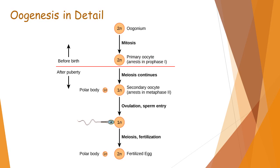Primary oocytes start meiosis first, but the process gets arrested in prophase first in the female fetus ovaries. All primary oocytes remain arrested in prophase first stage of meiosis first until the arrival of puberty. As a result, a female has about two lakh primary oocytes in each of her ovaries at the time of birth. When the female attains puberty, every month one primary oocyte is stimulated by follicle stimulating hormone and it resumes meiosis first.